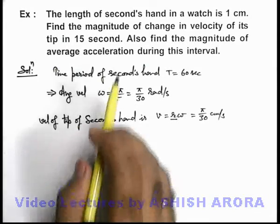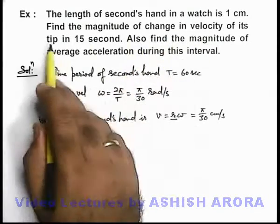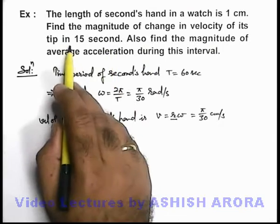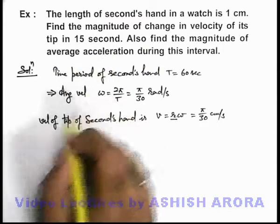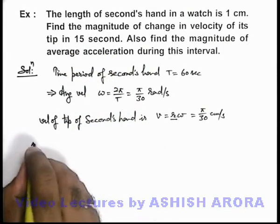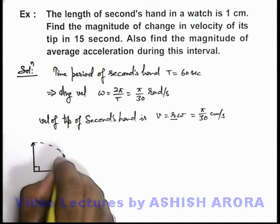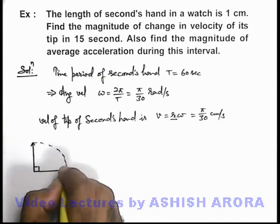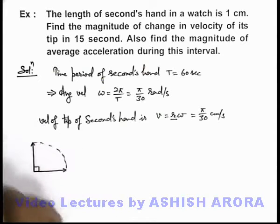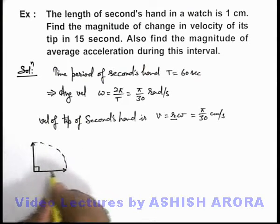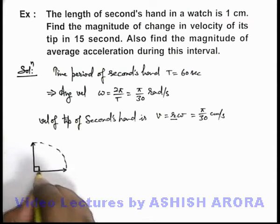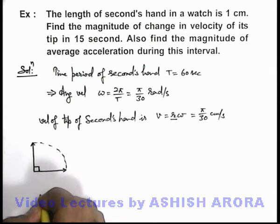Now we are required to find the change in velocity in 15 seconds. We know that in a watch, in 15 seconds, the second hand rotates by an angle 90 degrees. Because in 1 minute, in 60 seconds, it revolves complete 1 revolution. So we can state simply, in 15 seconds it rotates by 90 degrees.